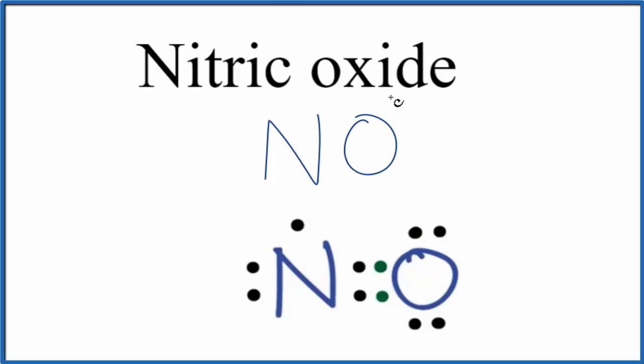So nitric oxide with a chemical formula of NO, this is the Lewis structure. It kind of gives you the structural formula, this double bond, but then this single lone electron here.